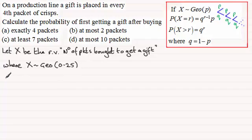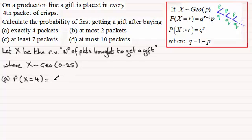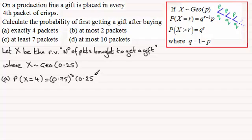For part a, we want the probability of taking exactly four packets to get the gift, so P(X = 4). We have three failures followed by a success: 0.75³ × 0.25. Working this out on a calculator gives 0.105 to three significant figures.